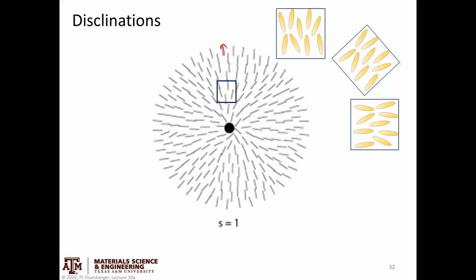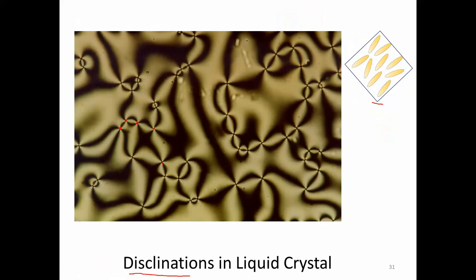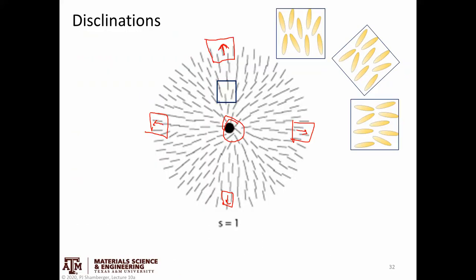A particular region of liquid crystals has what's called a director — a vector pointing in the average direction of that particular region of liquid crystal. A disclination occurs when we have rotations in that director. Over here it's pointing to the left, down here it's pointing down, and over to the right-hand side it's pointing to the right. Anytime these directors are rotating, we have to have some particular defect, and that defect is called a disclination. A disclination is a linear defect, and in this particular image it's coming in and out of the plane of the board.